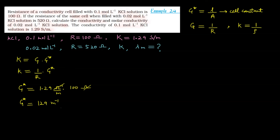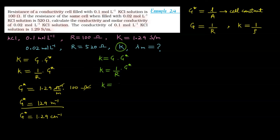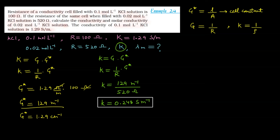यह value meters में है — meter inverse। अगर चाहें तो इसको centimeter inverse में भी convert कर सकते हैं — तो G* = 129 centimeter inverse। हम siemen per meter में ही conductivity निकालेंगे। Conductivity निकालनी है second solution के लिए — same formula: κ = G × G*। κ calculate करना है; G = 1/R और G* अभी calculate की है। So κ = G* / R = 129 meter inverse / 520 ohm = 0.248 ohm⁻¹ meter⁻¹ = 0.248 siemen per meter। This is the conductivity of the second solution with concentration 0.02 mol per liter.